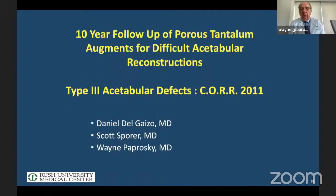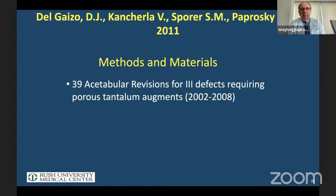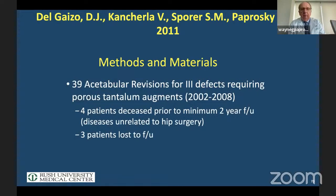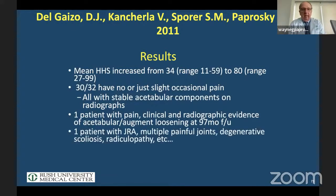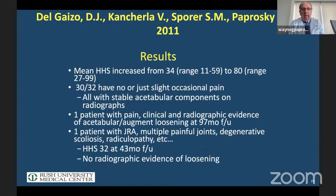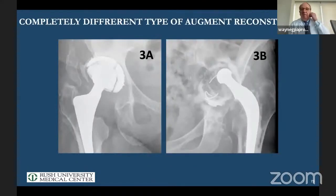Our data published in Clinical Orthopaedics, now over 10 years, looked at only type 3A defects. Of the 32 patients, only one showed possible evidence of loosening, but it never progressed and the patient remained asymptomatic. Basically, we have no evidence of radiographic loosening at now beyond 12 years in these type 3A defects.